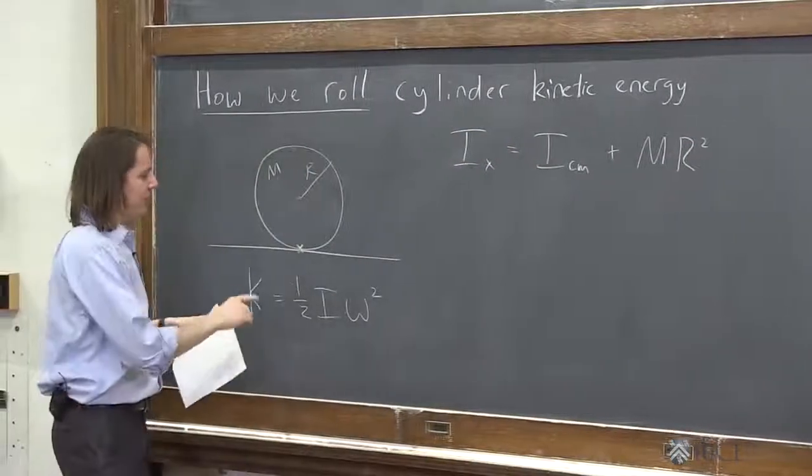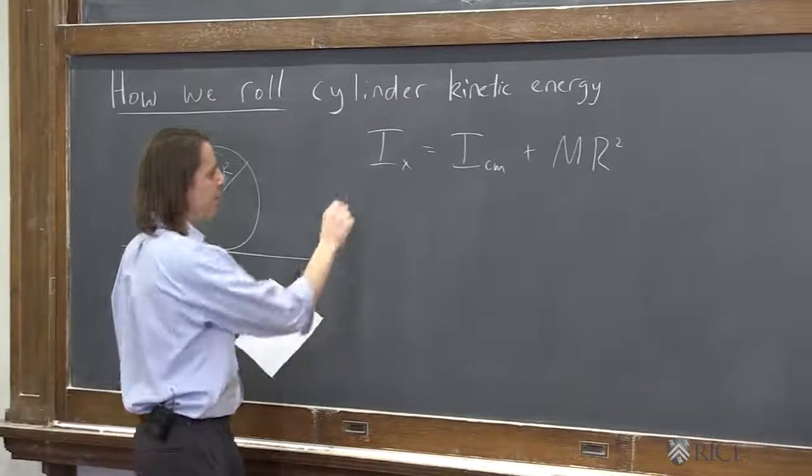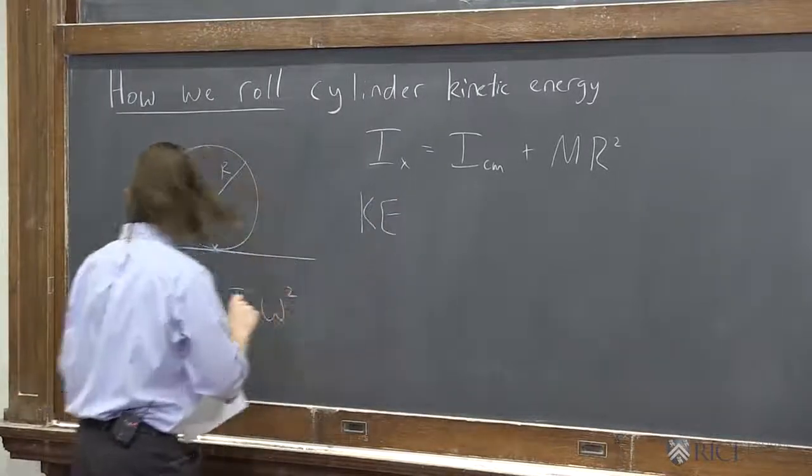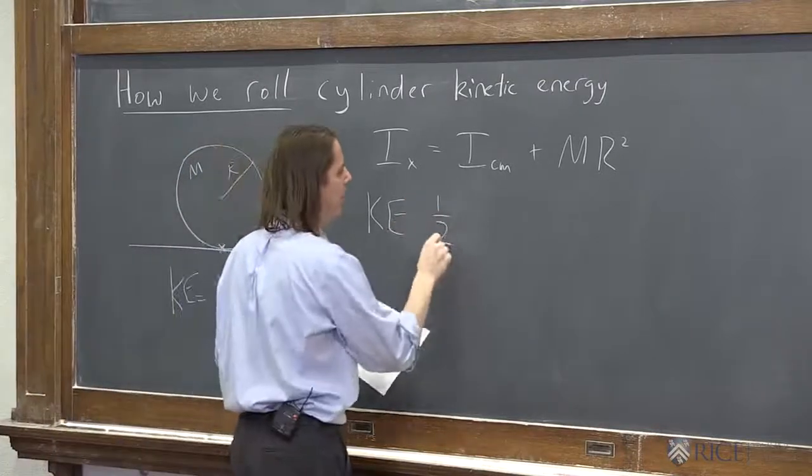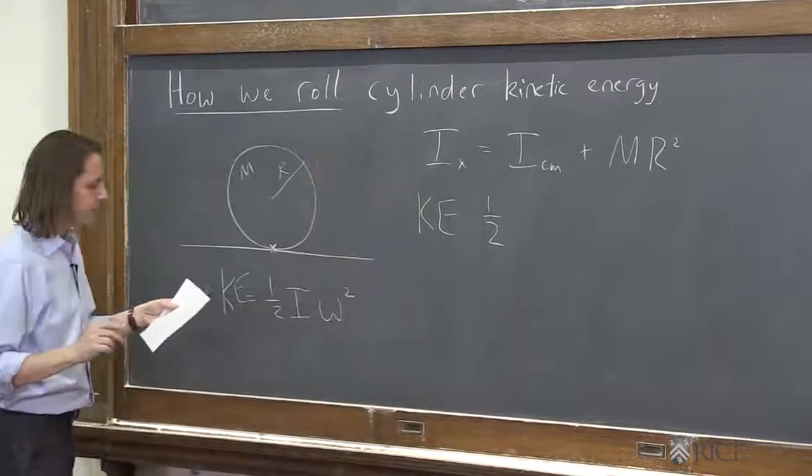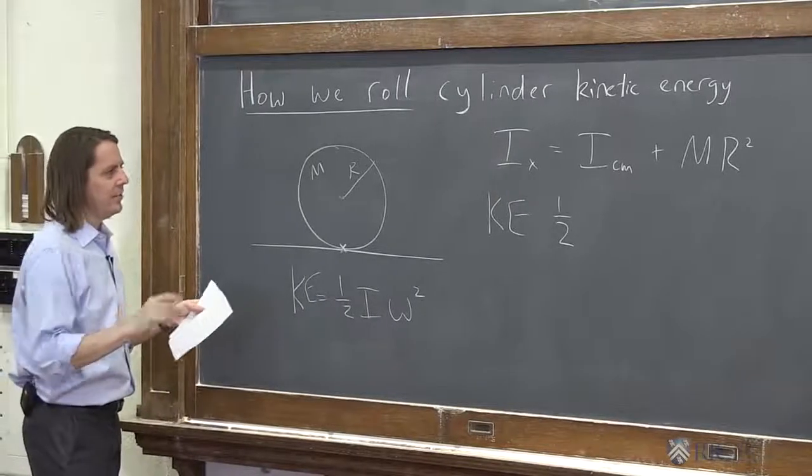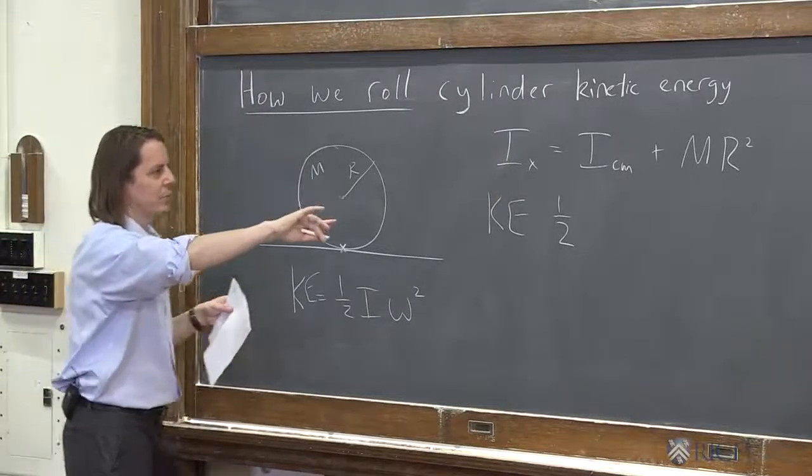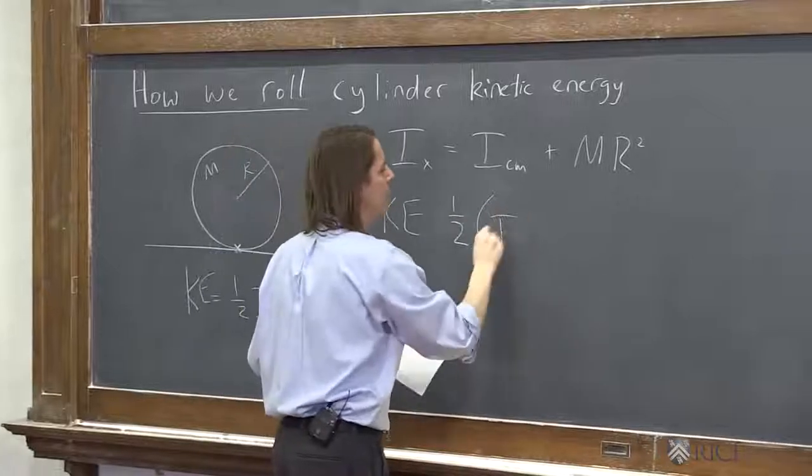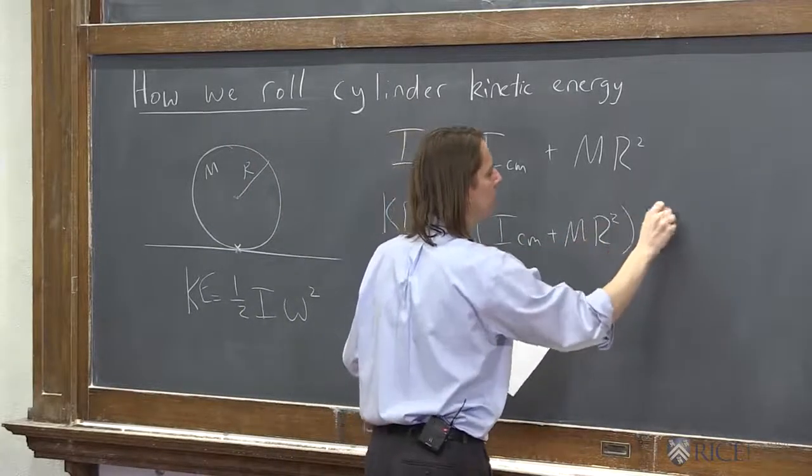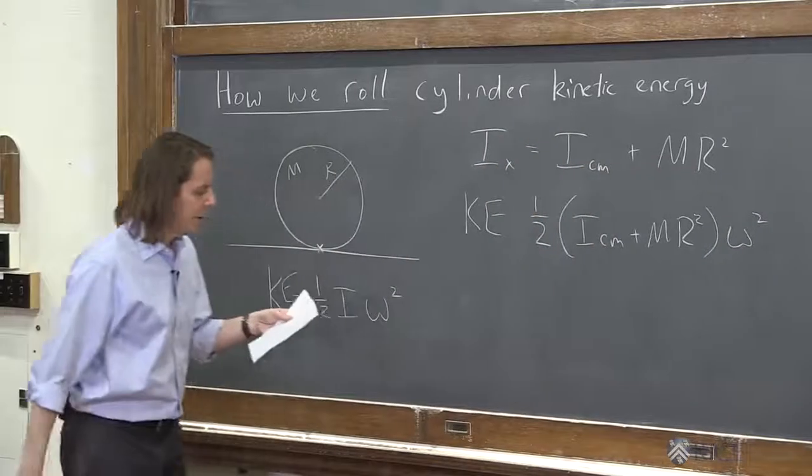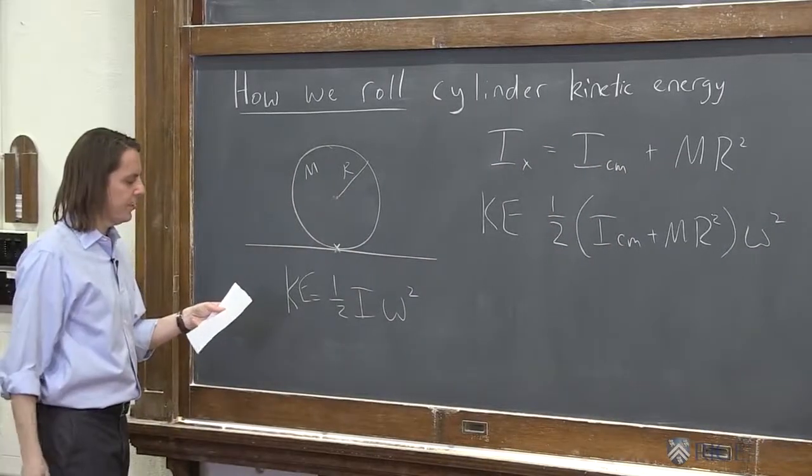All right, so let's say, let's keep calculating here and say then the kinetic energy equals 1/2. What we're going to do is say that times ω². 1/2 (I_cm + m r²) times the angular velocity as it rolls along.